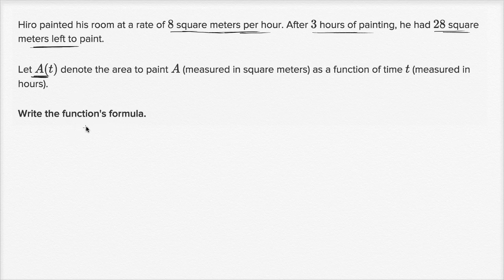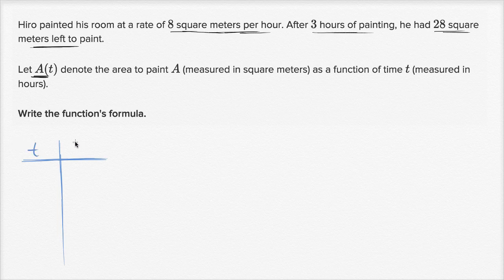What I like to do is think about a couple of points to make it tangible. Let's think about what a of t is at different times — this is time, and this is a as a function of time. They give us one point: after three hours of painting, he had 28 square meters left to paint. And again, a of t is how much we have left to paint, not how much we have painted.